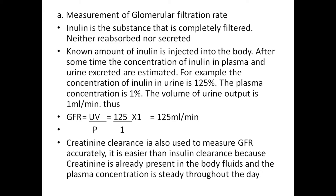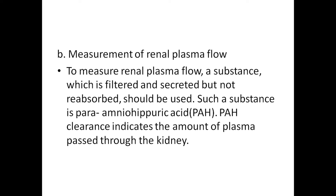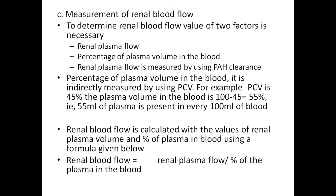Second is creatinine clearance, which is also used to measure GFR accurately. It is easier than inulin clearance because creatinine is already present in body fluids and plasma concentration remains steady throughout the day. Measurement of renal plasma flow — to measure renal plasma flow, a substance which is filtered and secreted but not reabsorbed should be used. Such a substance is para-aminohippuric acid (PAH); PAH clearance indicates the amount of plasma passed through the kidney.